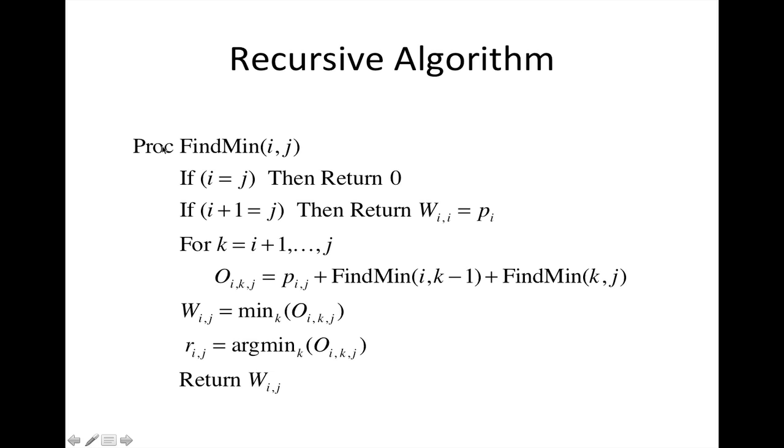We basically define this procedure to find the minimum, the optimal tree. When we want to do it for the whole tree, we'll just call find min for zero to n.